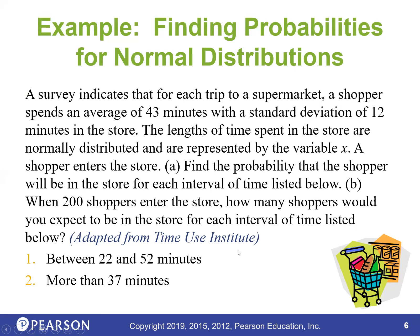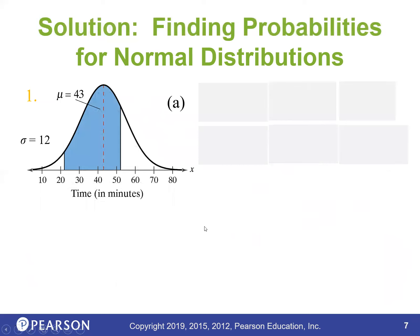Let's draw a normal curve. The center is 43, so mu = 43. The standard deviation is 12 minutes. We're trying to find the area between 22 minutes on the lower end and 52 minutes on the upper end.